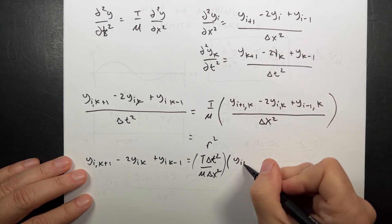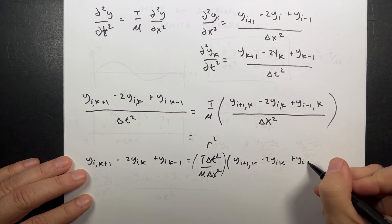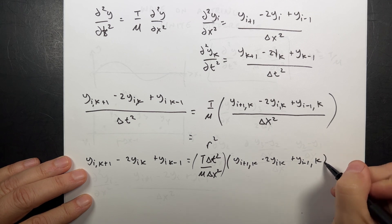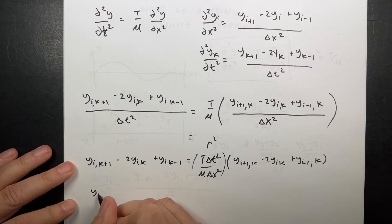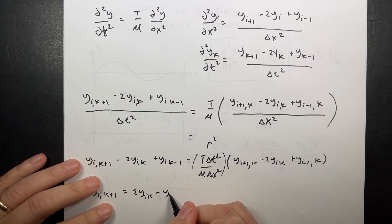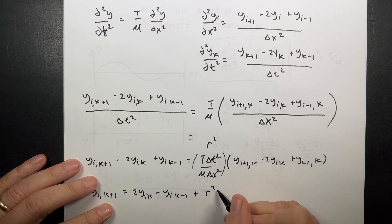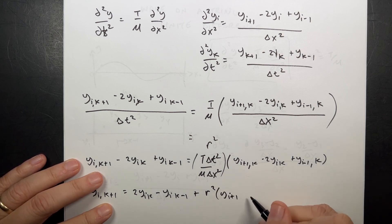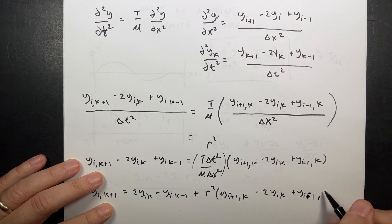So the full equation with r squared becomes: y_i,k+1 minus 2y_i,k plus y_i,k-1 equals r squared times (y_i+1,k minus 2y_i,k plus y_i-1,k).